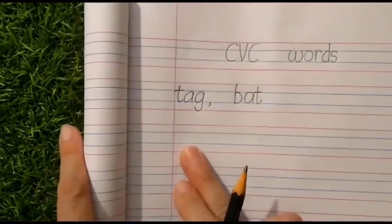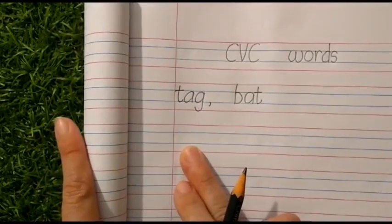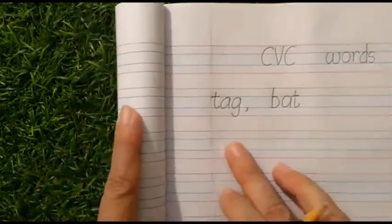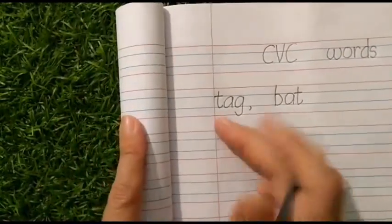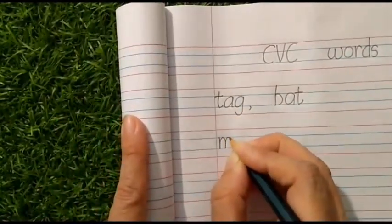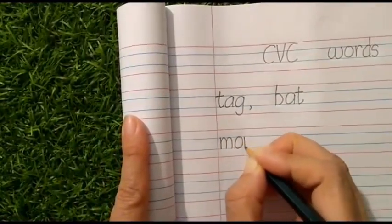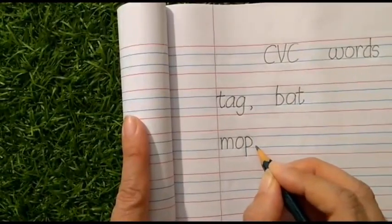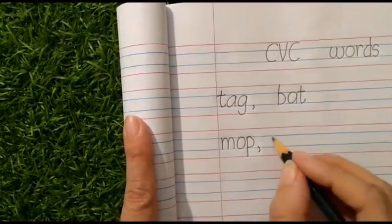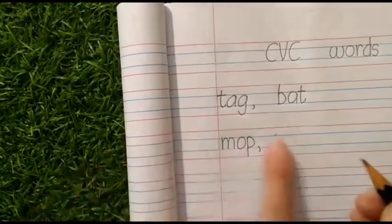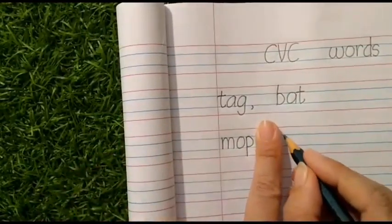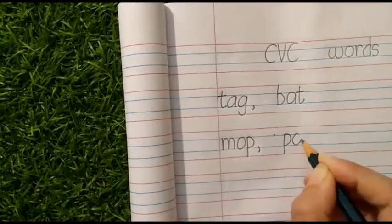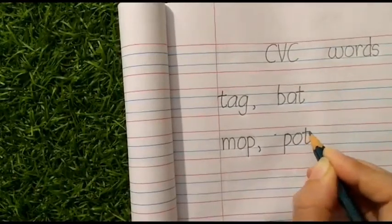Let us move on to the next line. We will write two words with the O sound. Let's write: mo, op, mop. After writing mop, we will put a comma and then write the word — pot, pot, pot.